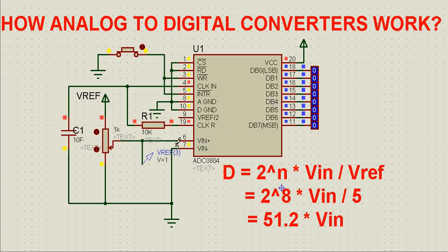We supply the analog voltage through pin number six and seven, and we can do so by changing the resistance of this potentiometer.